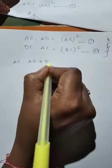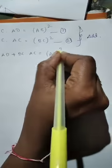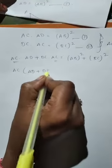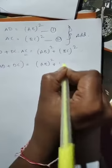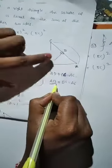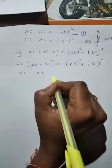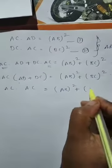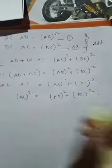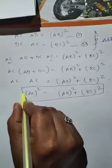Adding: AC × AD + DC × AC = AB² + BC². Taking AC as common: AC × (AD + DC) = AB² + BC². From the main diagram, AD + DC = AC. Therefore: AC × AC = AB² + BC², which gives us AC² = AB² + BC². We have proved the Pythagorean theorem!